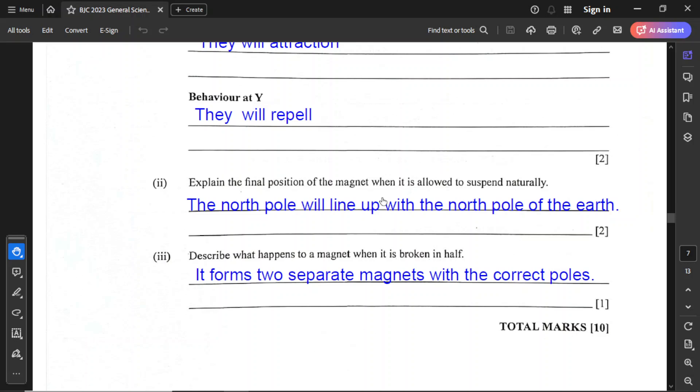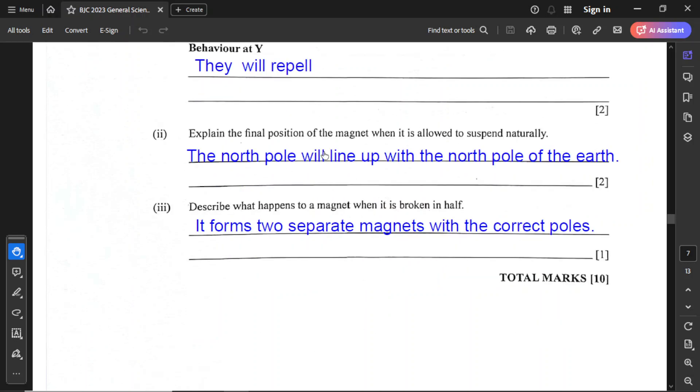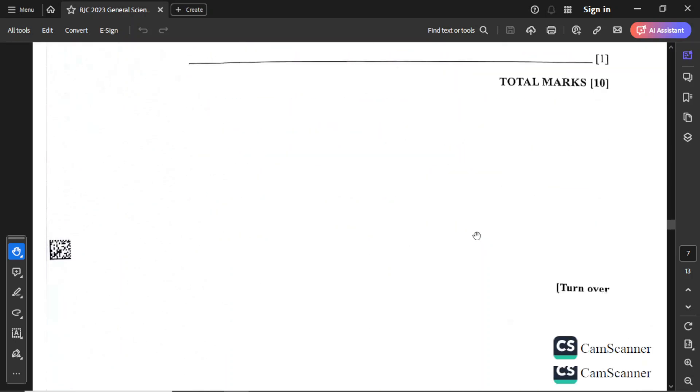For part two, explain the final position of the magnet when it is allowed to suspend naturally. Once the magnet is suspended naturally, the north pole will line up with the north pole of the Earth. For part three, describe what happens to a magnet when it is broken in half. It will form two separate magnets, and they will have their separate poles or correct poles, north and south. Each of them will have their north and south pole.